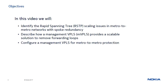In the following presentation we will first identify the rapid spanning tree scaling issues in Metro-to-Metro networks with spoke redundancy, and explain how a management VPLS can be used to provide a scalable solution that removes forwarding loops. In our lab, we will then configure a management VPLS for Metro-to-Metro protection and verify its operation.